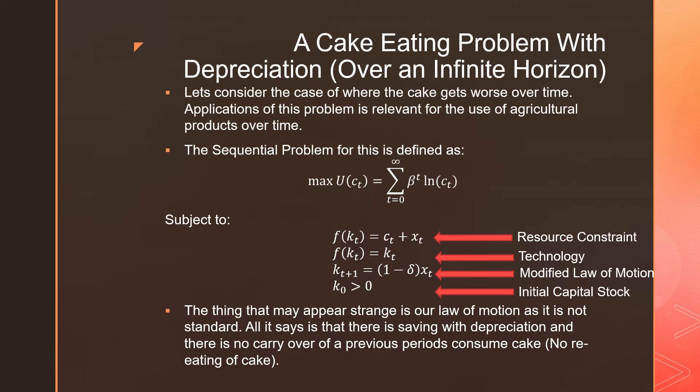The sequential problem for this is defined as the following. Again, this is your discounted log utility function over time. And we're going to have four constraints here. The first one is a resource constraint. The second one is a technology constraint. The third one is a modified law of motion, which I'll talk about right now. And the last one is our initial capital stock has to be positive, or the initial cake size more specifically has to be positive. The thing that may appear strange is that our law of motion is not standard by any means. All it says is that there is savings with depreciation and there's no carryover of the previous periods consumed cake. That means we can have no re-eating of the cake in question.